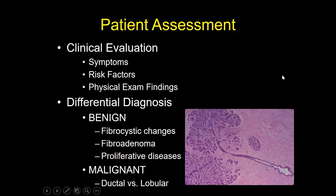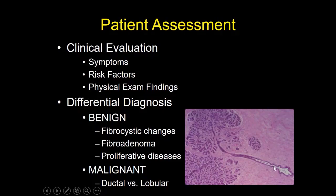If you have a patient who has a problem, you're going to perform a clinical evaluation. You're going to want to assess their symptoms, their risk factors, and perform a physical exam. Then you're going to think broadly about both benign and malignant possibilities. Keep in mind that breast disease predominantly happens in the terminal duct lobular unit, so invasive cancers typically happen in the terminal duct if it's a ductal cancer, or in the lobule itself if it's a lobular cancer.